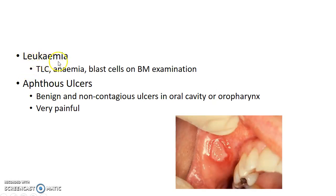Leukemia can also present with formation of membrane over tonsil. It can be diagnosed using total leukocyte count, presence of anemia, and presence of blast cells on bone marrow examination.